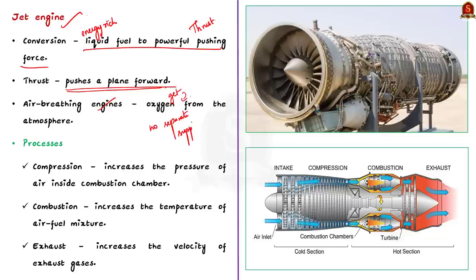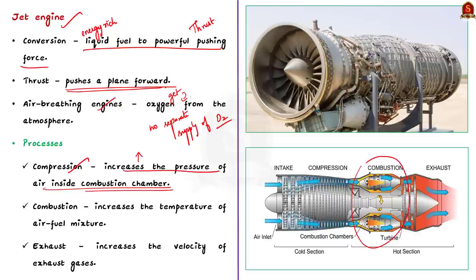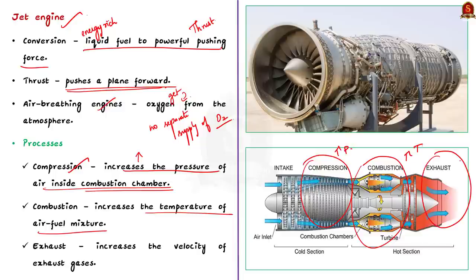There are three main processes involved in jet engines. First, the compression process increases the pressure of air trapped inside the combustion chamber. Second, the combustion process increases the temperature of the air-fuel mixture by releasing heat energy from the fuel. Third, the exhaust process increases the velocity of the exhaust gas, helping to power the aircraft. The jet engine converts liquid fuel into a powerful pushing force — thrust.